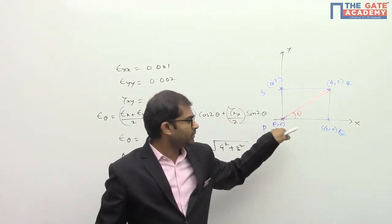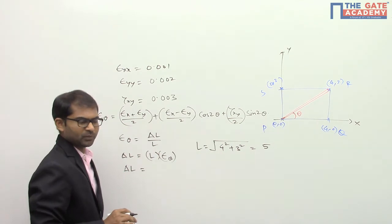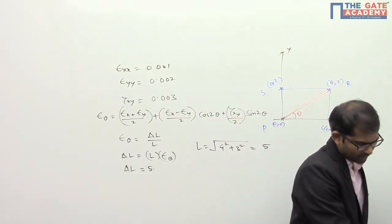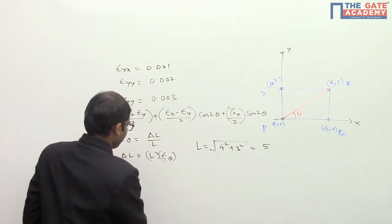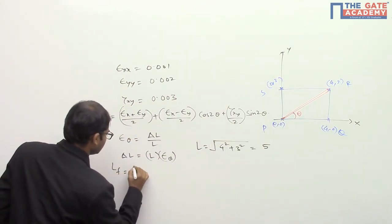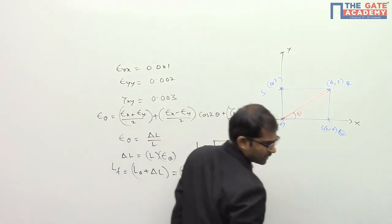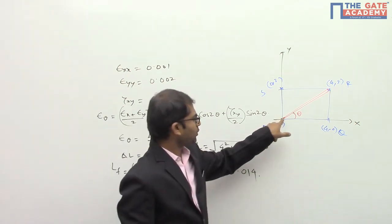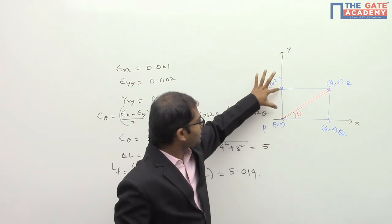Since the square dimensions are given in respective units, this length of 5 is also in those respective units. Substituting l into the equation gives us delta_l in those units. After doing the calculations, the change in length delta_l comes out to be 0.014. They are asking for the deformed length of the elongated diagonal, so the final length = original length + delta_l = 5 + 0.014 = 5.014.